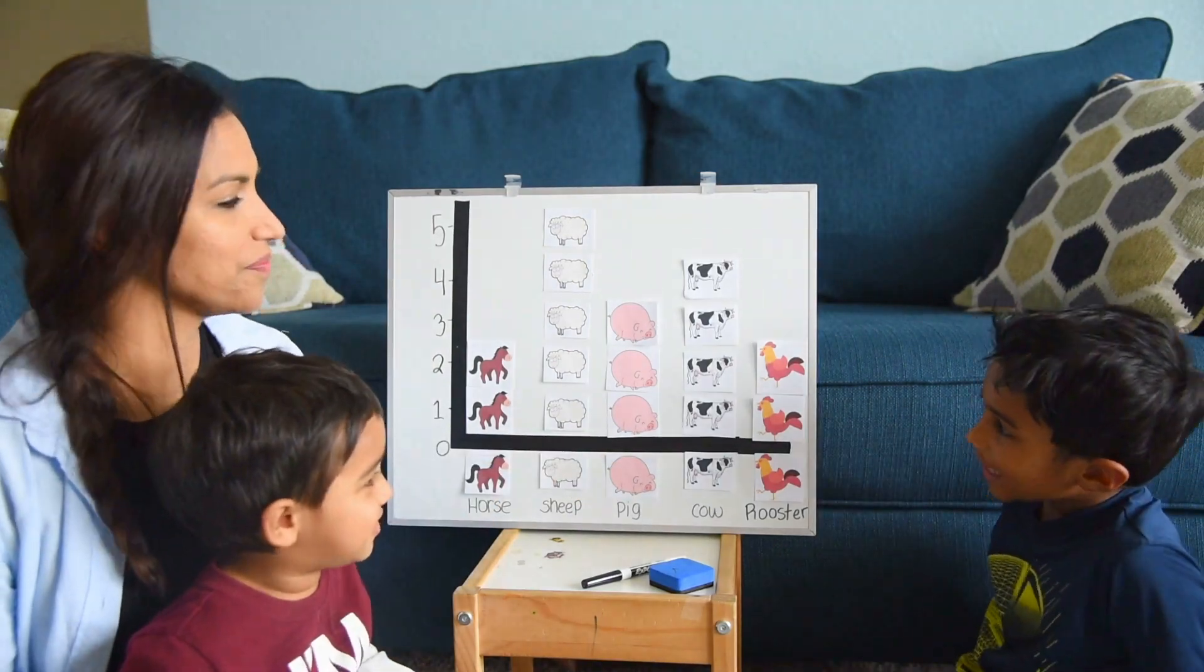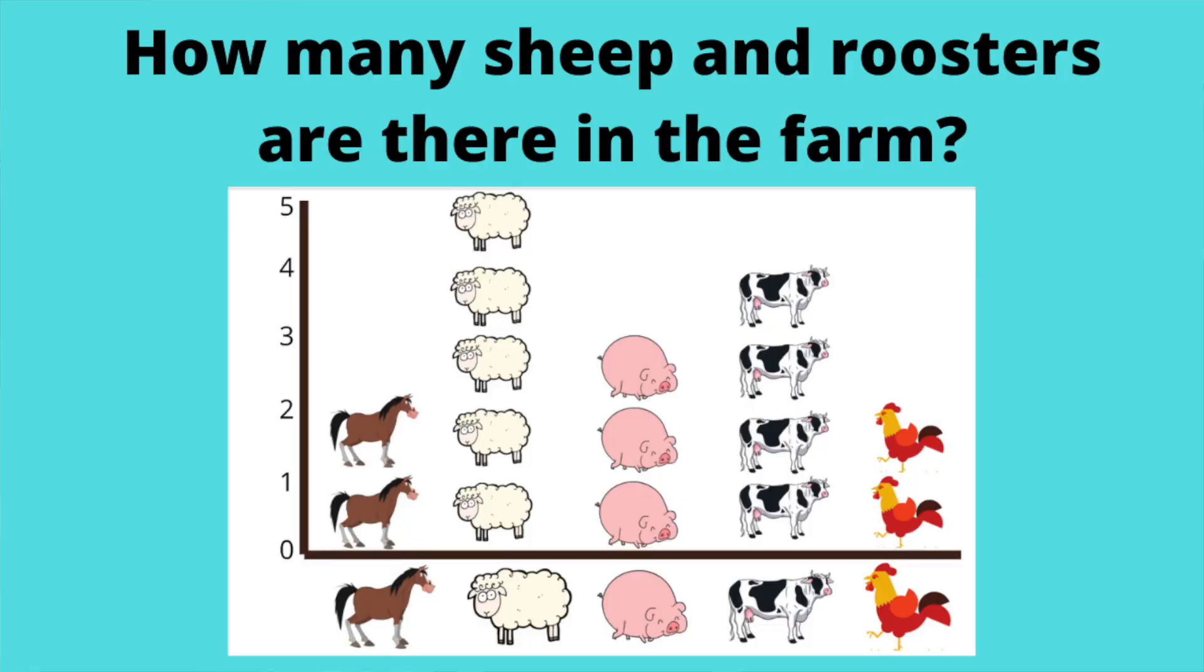Are you ready for the next one? How many sheep and roosters are there in the farm? One, two, three, four, five, six, seven. Seven as well.